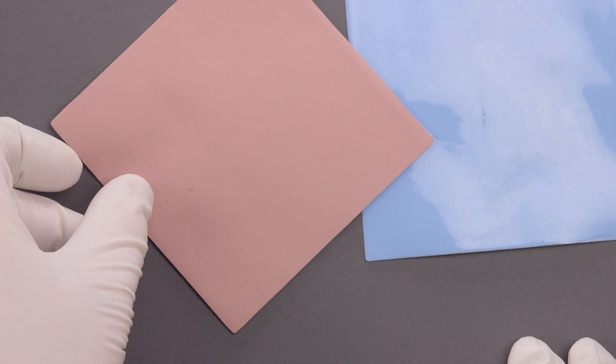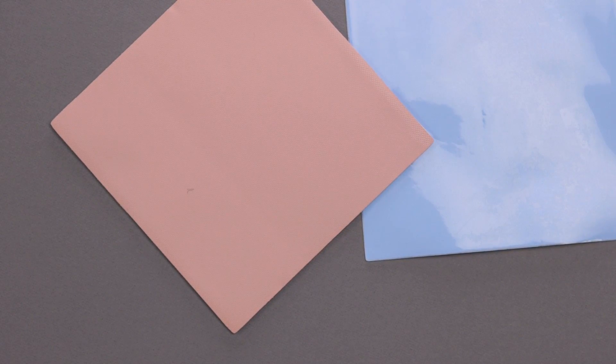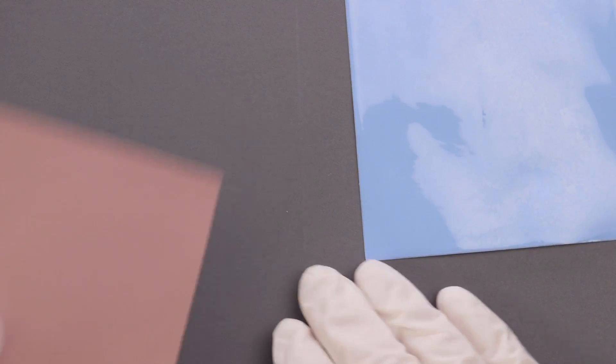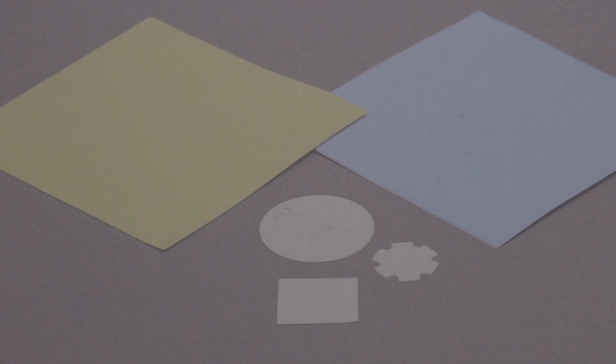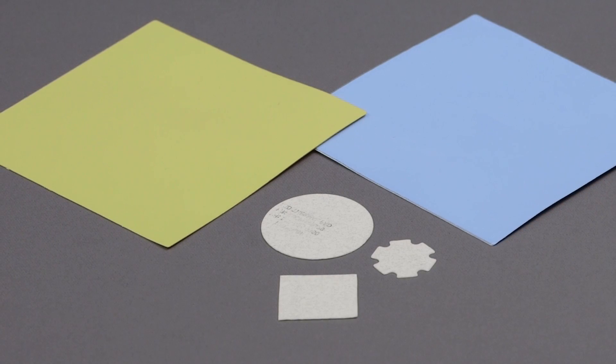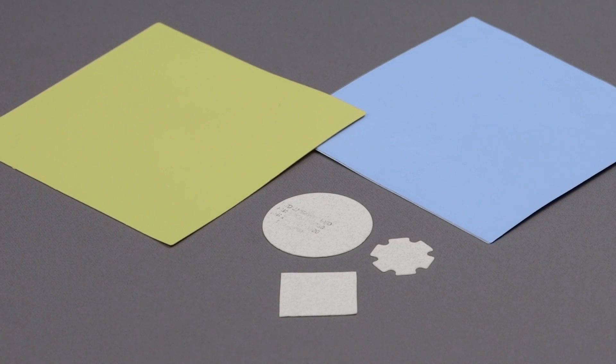Phase change pads have similar thermal resistances to those of a thermal grease and can be applied like a thermal pad. They blend the ease of assembly of a pad with the thermal conductivity of a grease. As with thermal pads, phase change pads can be die cut and must be of an appropriate thickness for use with LED arrays.